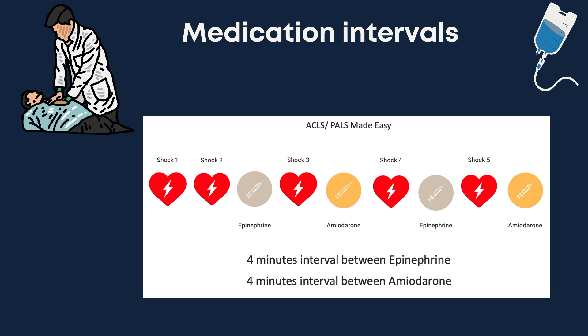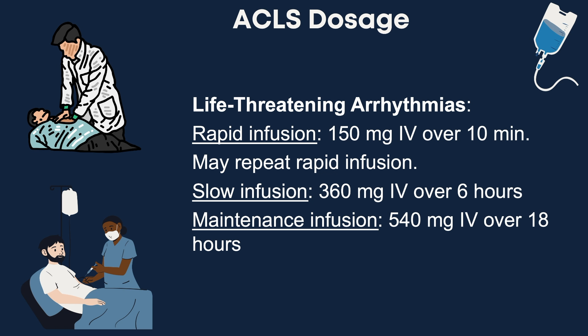It should be noted that amiodarone doses could be replaced with lidocaine as an alternative, which we'll discuss in a future video. For life-threatening arrhythmias in the ACLS setting, amiodarone may be administered as a rapid infusion of 150 mg over 10 minutes, which is 15 mg per minute, repeated as needed. This is followed by a slow infusion of 360 mg over 6 hours at 1 mg per minute, and then a maintenance infusion of 540 mg over 18 hours at 0.5 mg per minute. The maximum cumulative dose in 24 hours is 2.2 g.